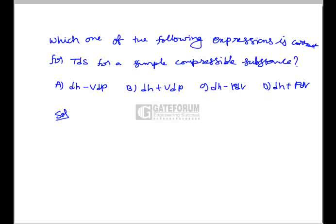For a simple compressible substance, using the first law of thermodynamics, we can write dQ = du + dW, where dQ can be written as TdS and dW as pdv.